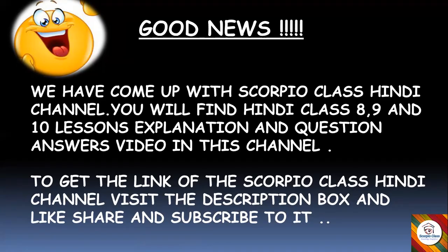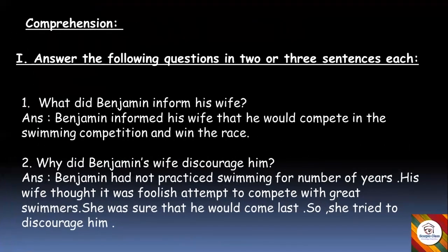Let's move ahead and look at the question and answers. The first section is comprehension from your textbook — answer the following questions in two or three sentences each. First question: What did Benjamin inform his wife? Answer: Benjamin informed his wife that he would compete in the swimming competition and win the race.